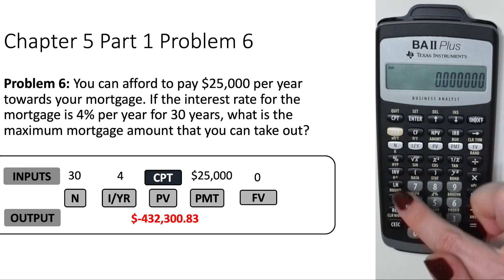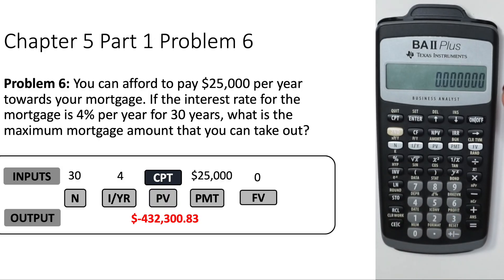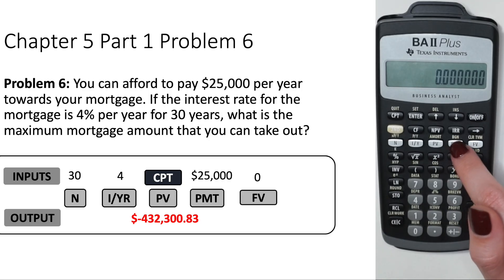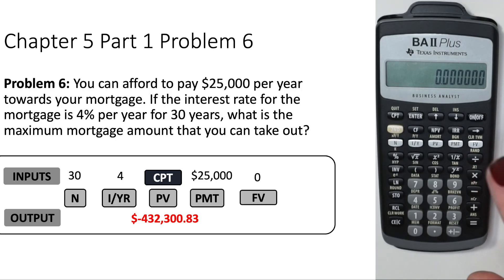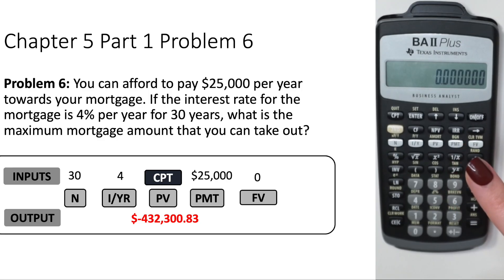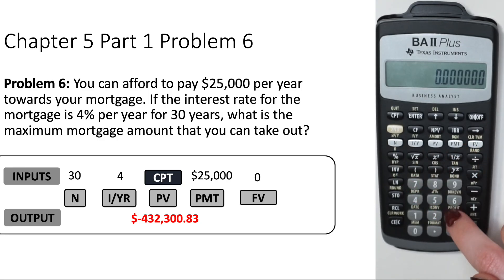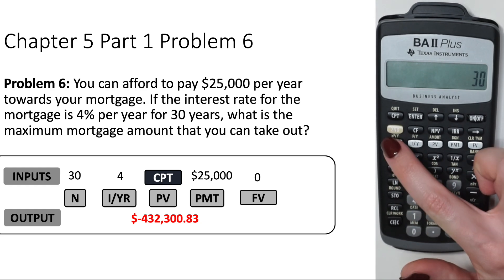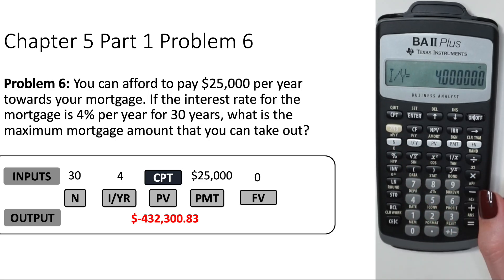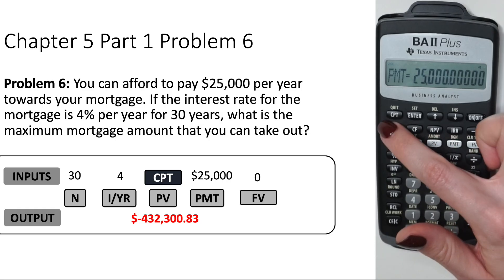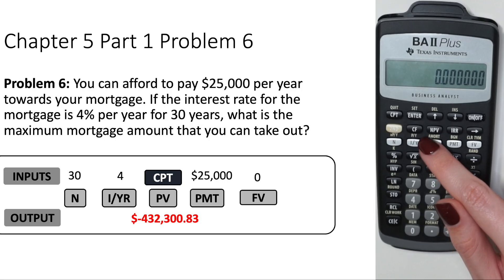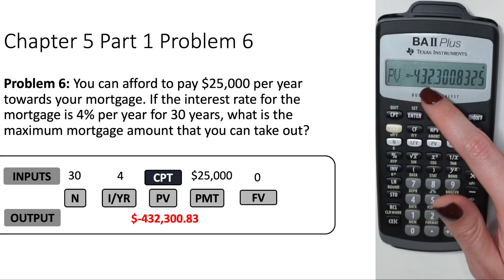To solve annuities, use the payment button. For the mortgage problem in chapter five, problem six: you can afford $25,000 per year, mortgage rate 4%, 30 years. Set N=30, I=4%, PMT=$25,000. Quit out, hit Compute, then Present Value — you get negative $432,000, which is the maximum mortgage amount you can afford.